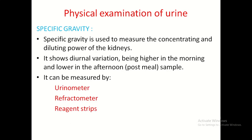Specific gravity is used to measure the concentrating or diluting power of the kidneys. It shows diurnal variations — being higher in the morning as urine is concentrated, and lower in the afternoon after meals.